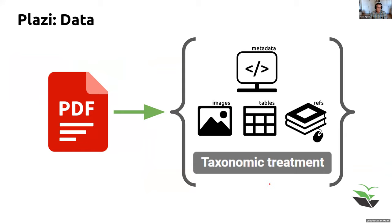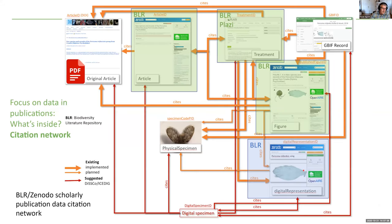Looking at this from a distance, a PDF — the most common means of publishing today, alongside early books and journals — is like a scientific article: it has metadata, images, tables, and references. But it also has these taxonomic treatments. From a knowledge graph point of view, it is a very rich ecosystem with a huge number of implicit internal links.